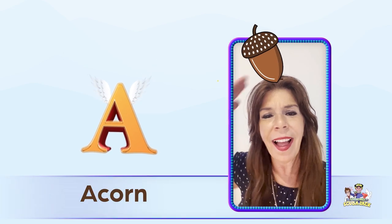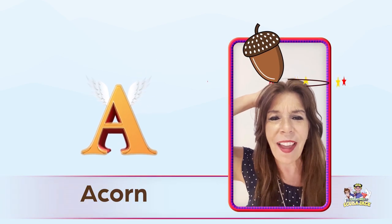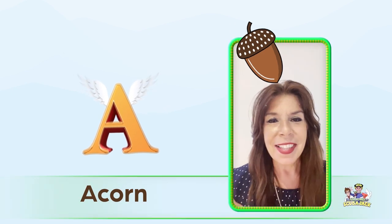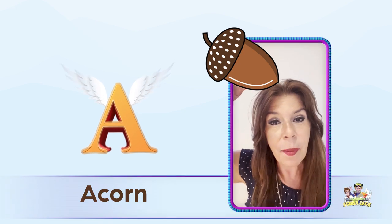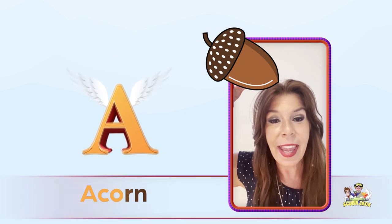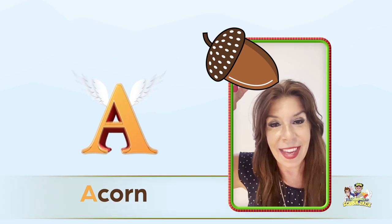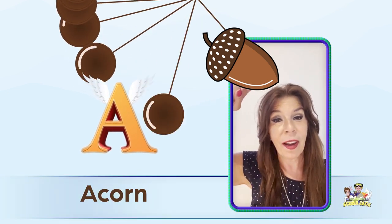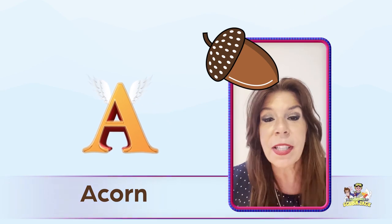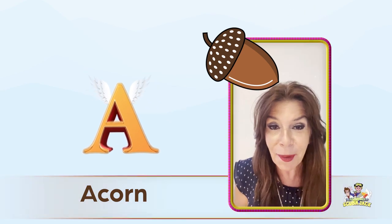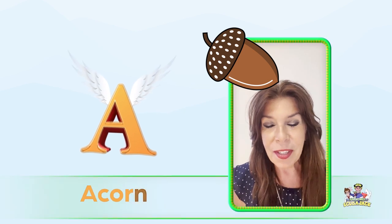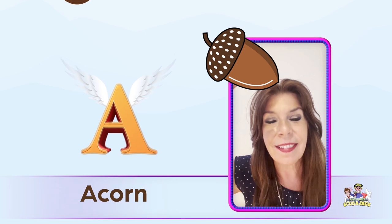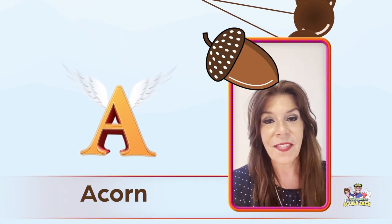The next word is acorn. This is a picture of an acorn. Can you say acorn? What color is the acorn? You're right, it's brown! Let's say acorn three times — acorn, acorn, acorn! And what color is the acorn? That's right, it's brown. Very good!